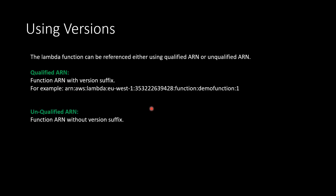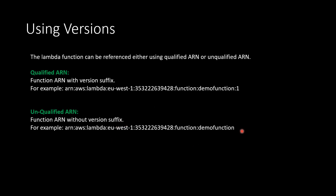An unqualified ARN is the function ARN without the version suffix. When we invoke a Lambda function using an unqualified ARN, it implicitly invokes the $LATEST version, which is the latest unpublished version. The qualified ARN for each function version is unique. After we publish a new version we cannot change the ARN of the function code. So we have seen how to create Lambda versions and how to access them using qualified and unqualified ARNs.